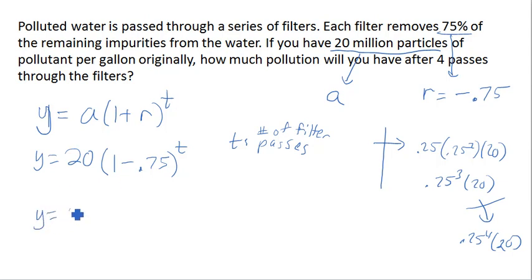So to answer our question here, what we really need to do is take this and evaluate it for four passes, which you'll notice is 20 times 0.25 to the 4th, which is exactly the same thing we had come up with in our more sort of intuitive approach.